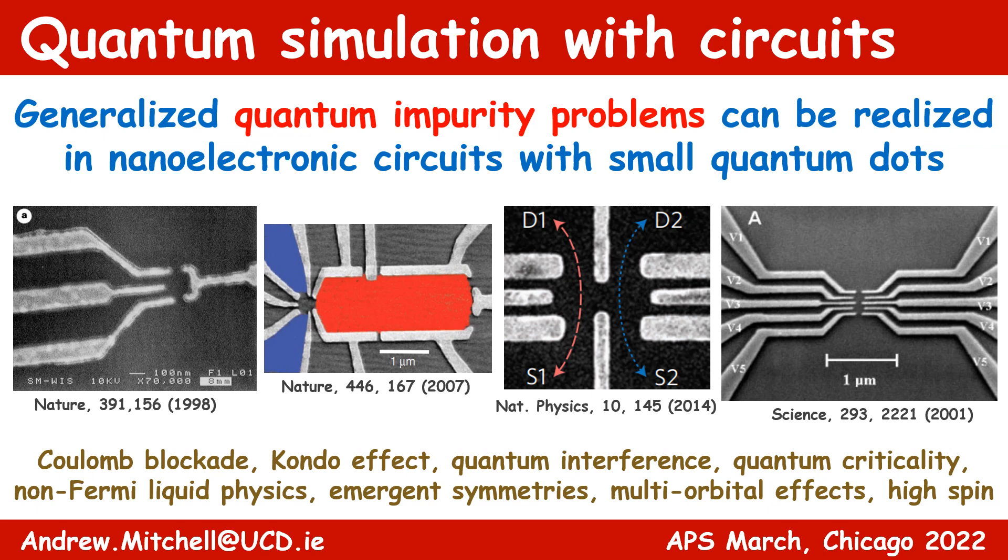Quantum dot devices constitute a wonderfully versatile and tunable platform for realizing a whole host of correlated electron physics. In particular, traditional semiconductor quantum dot systems have been shown to exhibit the non-trivial many-body physics of generalized quantum impurity models. Detailed comparisons between experiments and theory have established such quantum dot devices as accurate experimental analog quantum simulators, including phenomena such as the Coulomb blockade, Kondo effect, quantum criticality, and emergence.